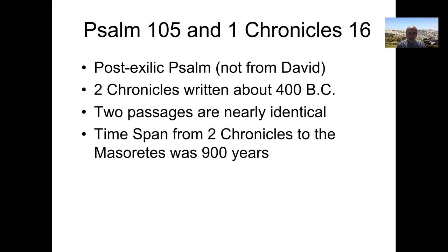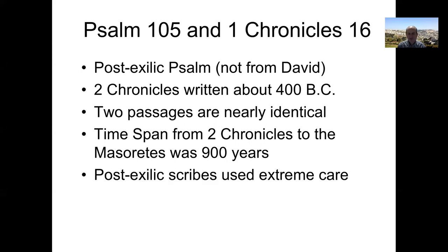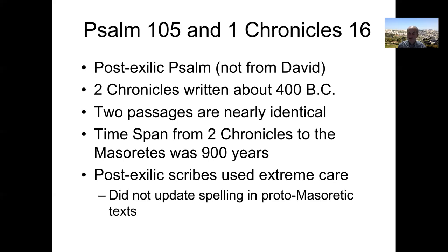The time span from 1 Chronicles to the time we get to the Masoretes was about 900 years. So there you have two different passages being copied independently for 900 years, and they're still practically identical. I think this can give us good confidence that the post-exilic scribes used extreme care when copying the scriptures — they usually copied letter by letter. They didn't even update the spelling to reflect the more modern spelling; they kept the more archaic spelling which didn't have too many vowel letters.